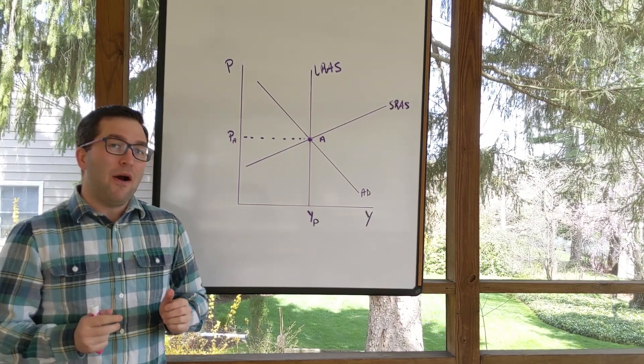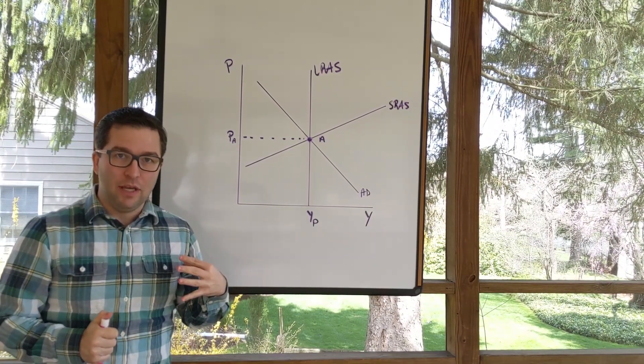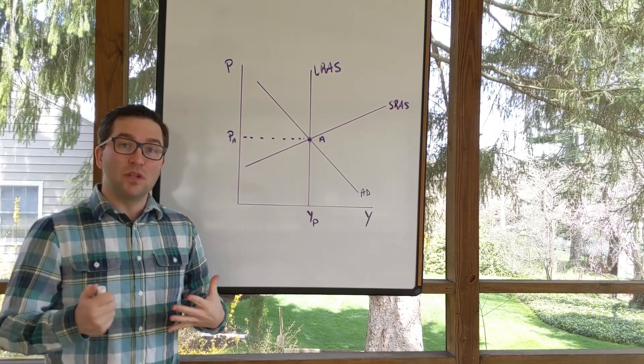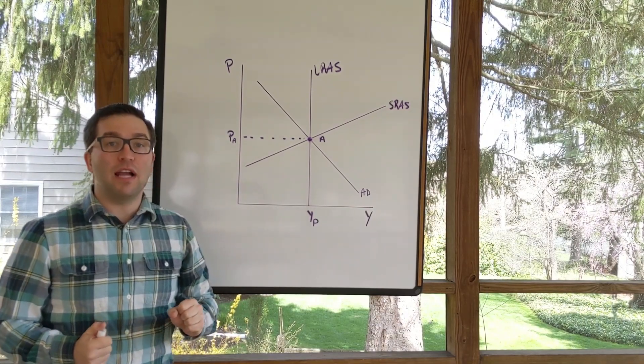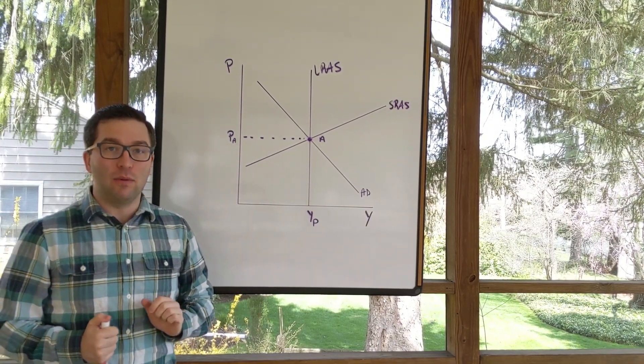We spoke previously about how if the economy enters a recession and we leave it alone, prices will adjust and the short-run aggregate supply curve will come back to the long-run equilibrium.